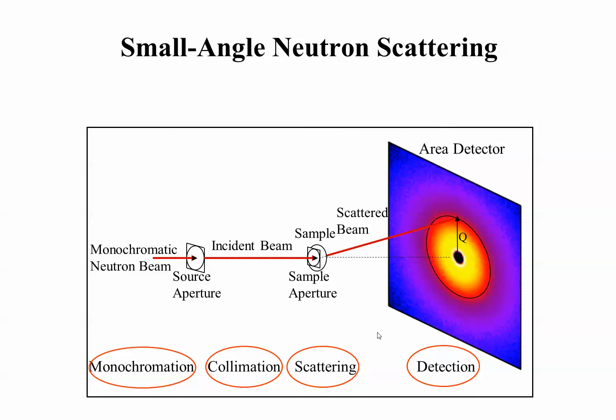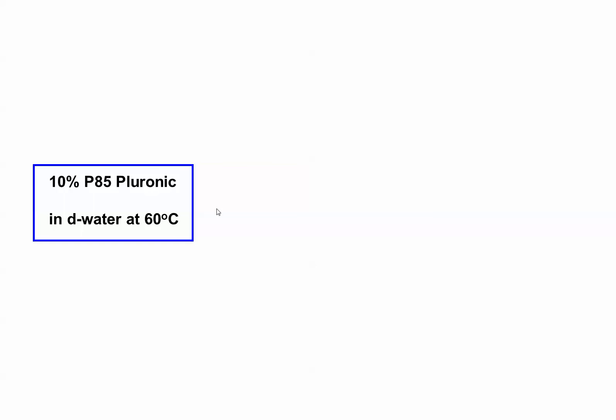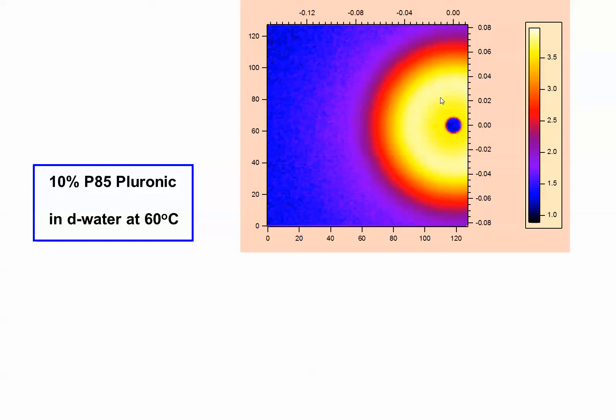Small angle neutron scattering. Those are the four steps that we talked about. This is the scattering variable, which is proportional to the scattering angle, inversely proportional to the neutron wavelength. Let me show you an example, scattering example.